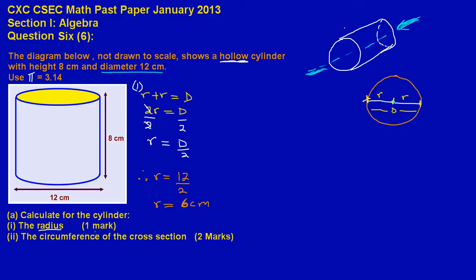Now let's look at the circumference of the cross section. They want us to find the circumference of the cross section in part 2, and the circumference is really the distance around the circle. So it's this orange line they want us to find.